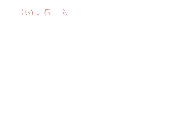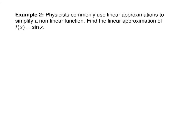Another way to do this problem would have been to take f(x) equals root x and find the linearization at A equals 4. That's the same thing — your equation will be different, but it lets you plug in numbers close to 4. In that case you could plug in 3.98 and 4.05 directly for x, because there's no weird x plus 3 in the function.